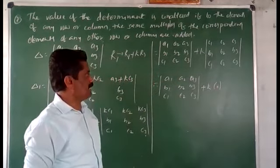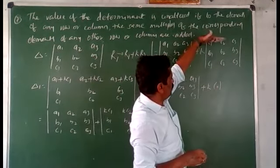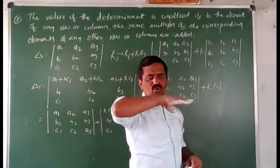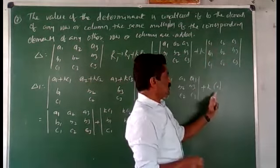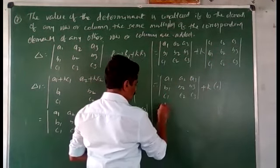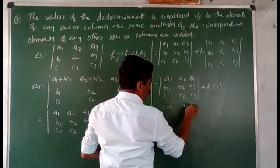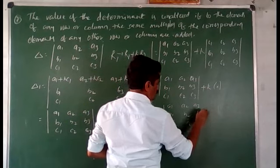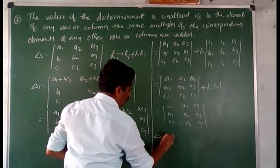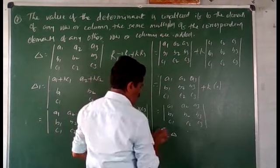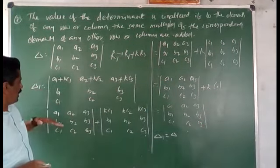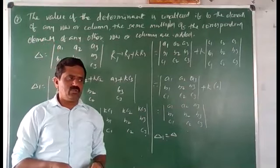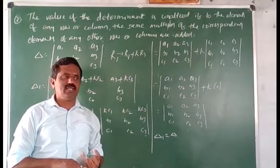Now, in the second determinant, row 1 and row 3 are identical (both c1, c2, c3). From our previous class, we know that if two rows of a determinant are identical, the value of the determinant is 0. So delta1 equals delta plus k times 0, which gives delta1 equals delta. Therefore, the value of the determinant remains the same when a constant multiple of one row or column is added to another.